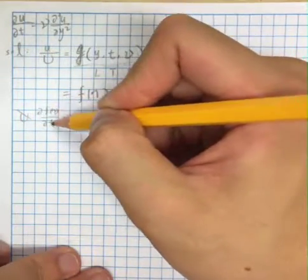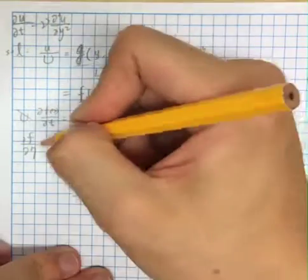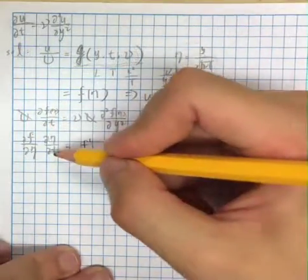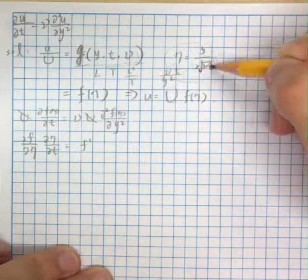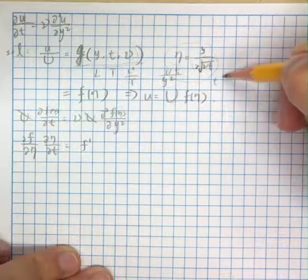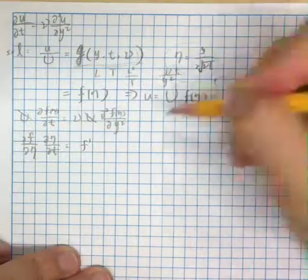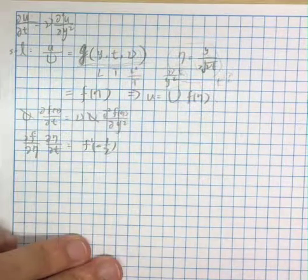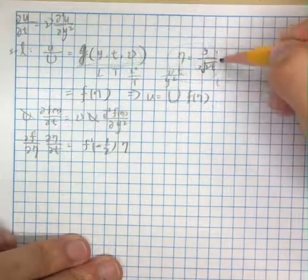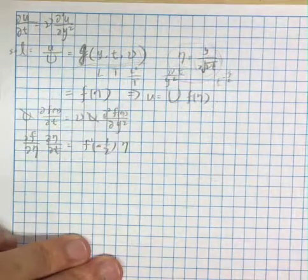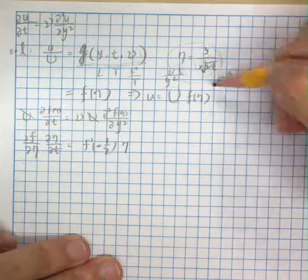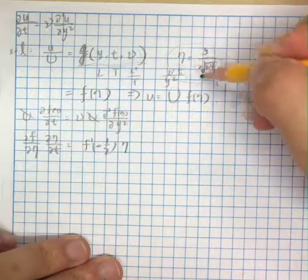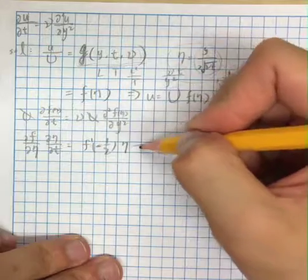df/dt is just df/d eta times d eta/dt. df/d eta we call f prime. For d eta/dt, we see a square root of t in the denominator, so it's something like t to the power of minus one half. Taking this derivative, we pull out the minus one half, and what remains is eta over t. So the left-hand side gives us f prime times minus eta over 2t.